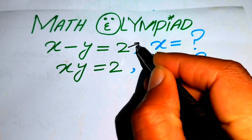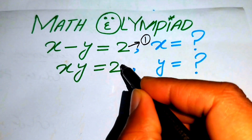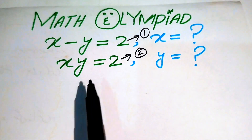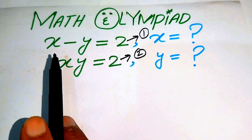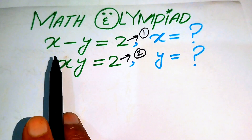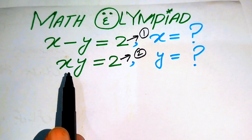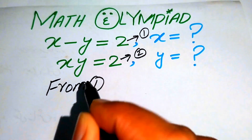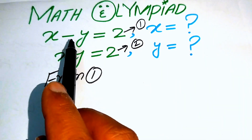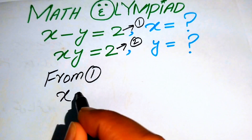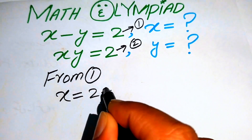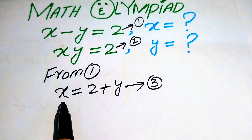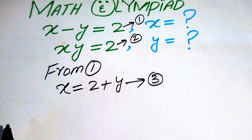We call the first equation number 1 and the second equation number 2. We focus on equation number 1 and get the value of x, then substitute it into equation number 2. From equation number 1, we move minus y to the right hand side and get x equals to 2 plus y. We call this equation number 3.